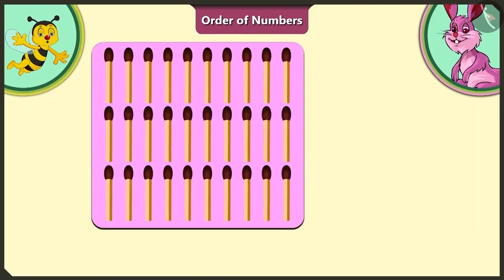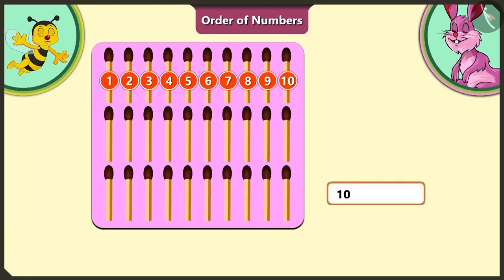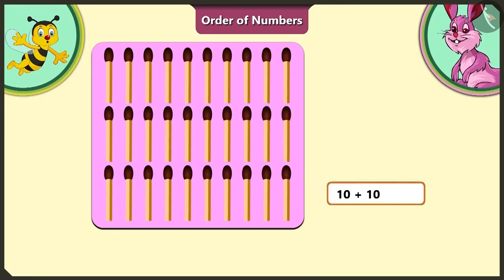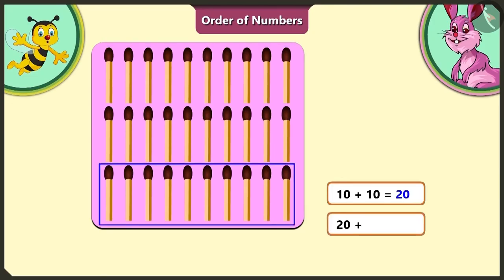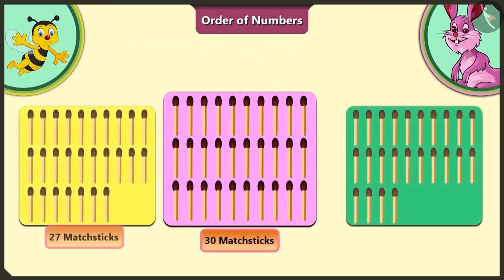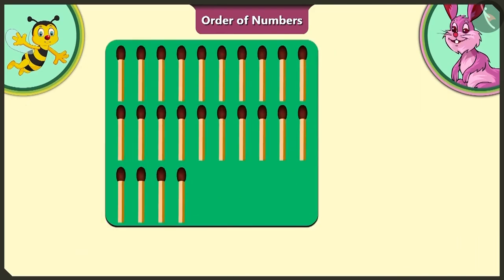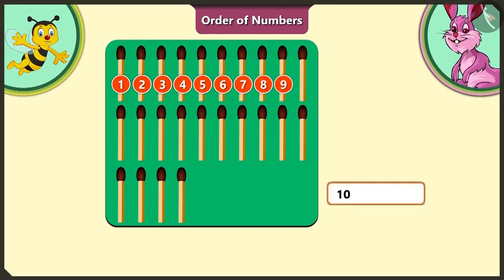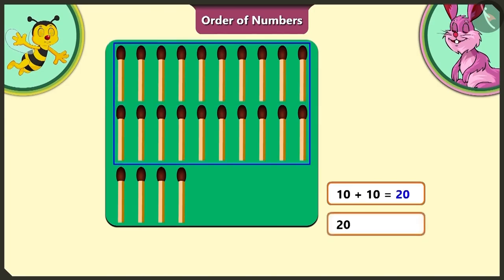And the matchsticks on the pink card? The first group on the pink card has 1, 2, 3, 4, 5, 6, 7, 8, 9, 10 matchsticks. Adding the next group gives 20, and adding the next group again gives 30 matchsticks — the pink card has 30 matchsticks in all. The first group of matchsticks on the green card has 1, 2, 3, 4, 5, 6, 7, 8, 9, 10 matchsticks. Adding the next group gives 20, and adding the 4 remaining matchsticks gives us 24 matchsticks in total.